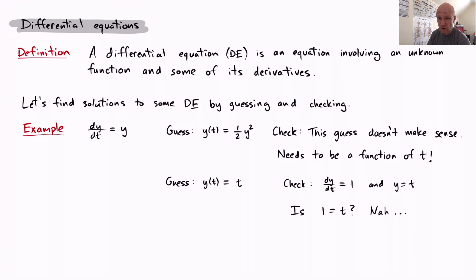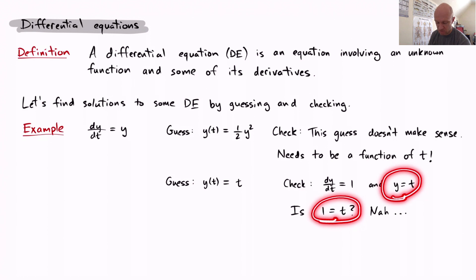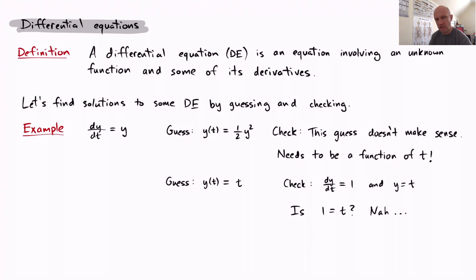Let's make an incorrect guess that actually makes sense so we can check it. Let's guess y of t equals t. If I differentiate, dy/dt equals 1. And y equals t by the original guess. Is 1 equal to t? No. So y of t equals t is not a solution. This is a good time to pause and think about what the differential equation is really saying — that y of t is its own derivative. Think of a function that is its own derivative.